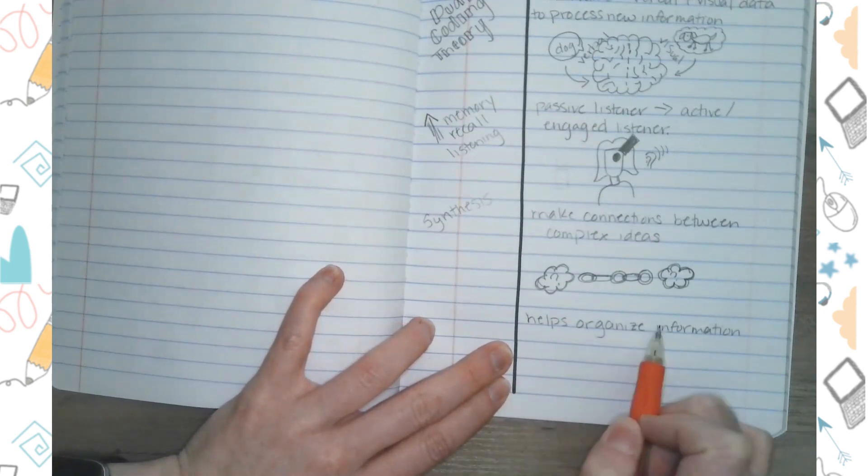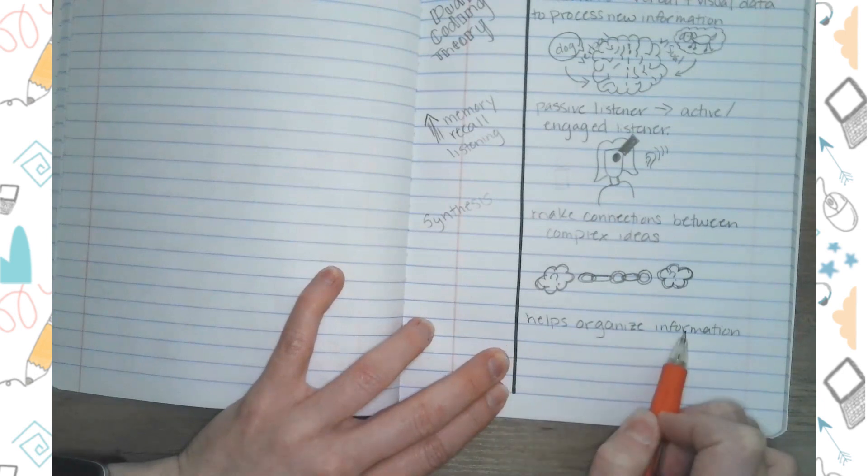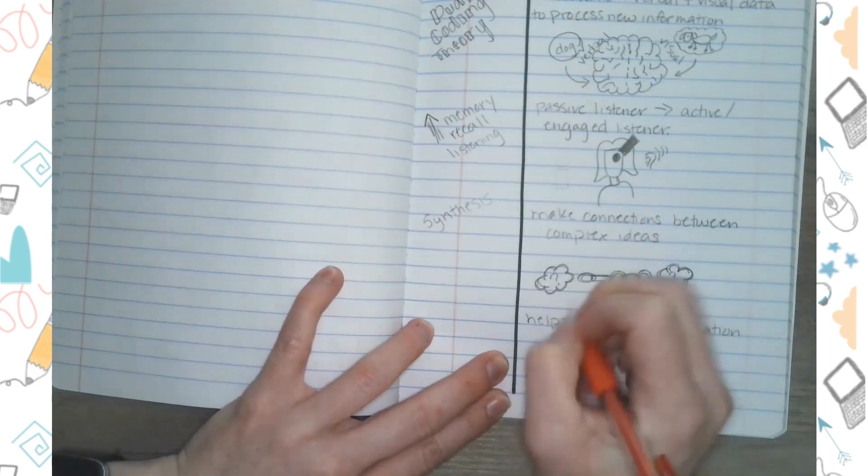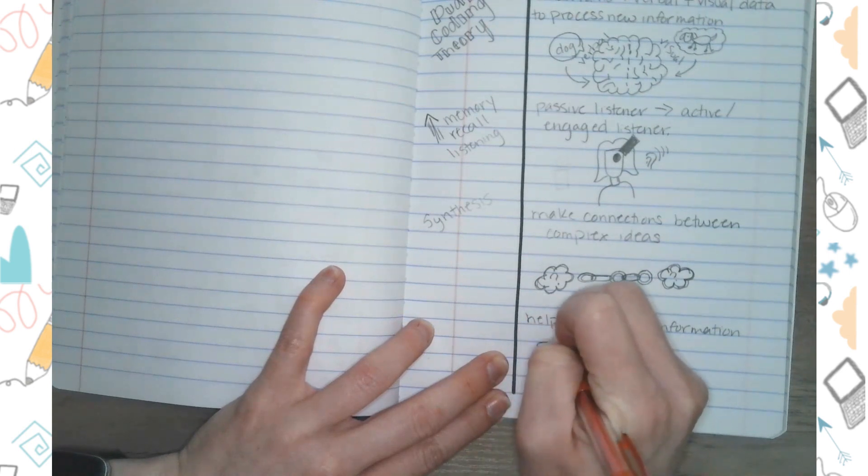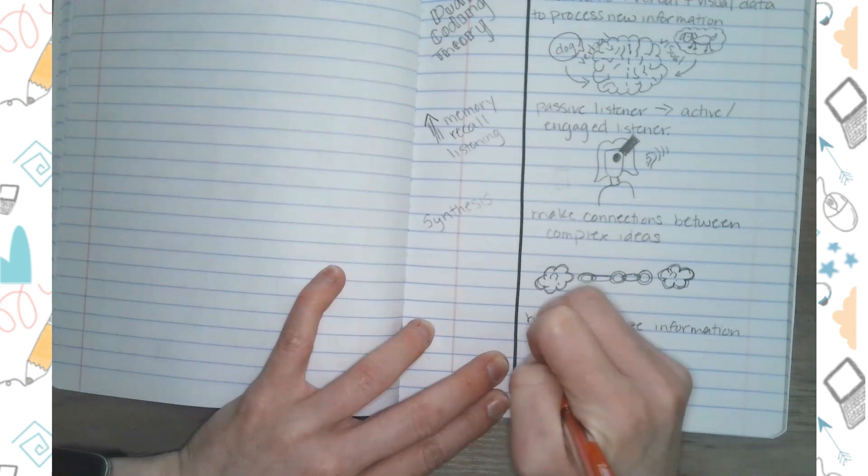The last reason that we have written down for why we use sketchnotes is the fact that they help us organize information. So I am going to draw a few of the different structures of sketchnotes that we have actually used doing these simple sketchnotes.